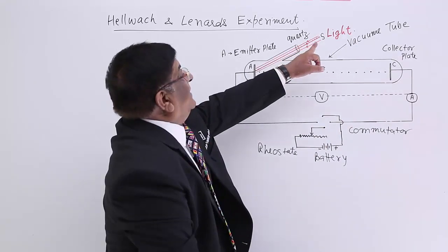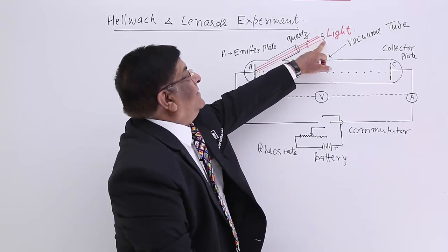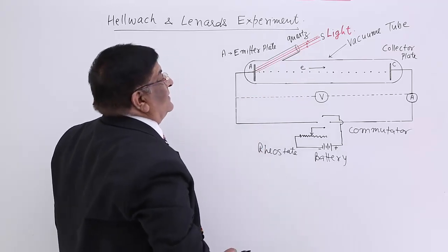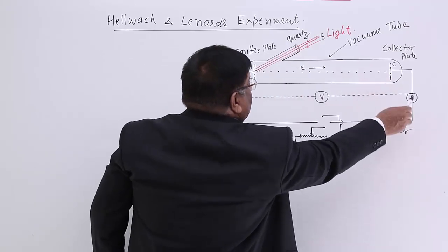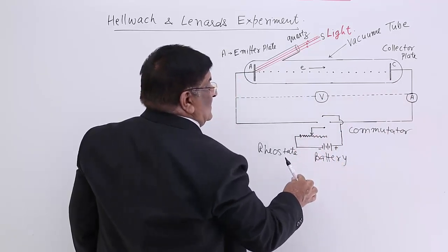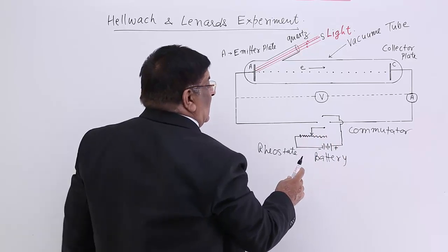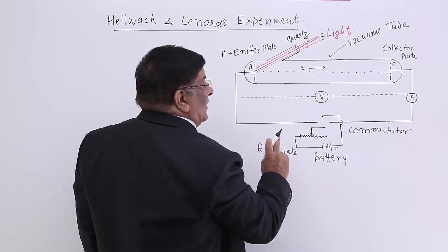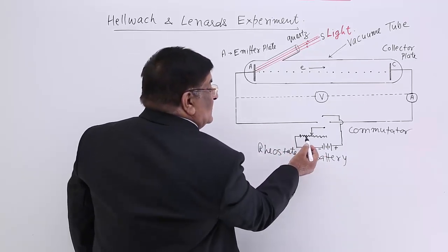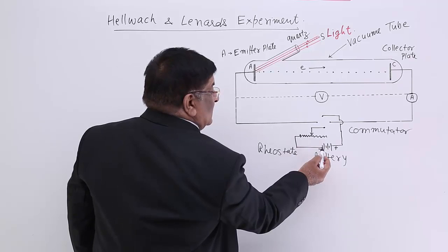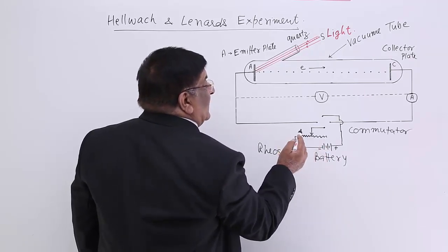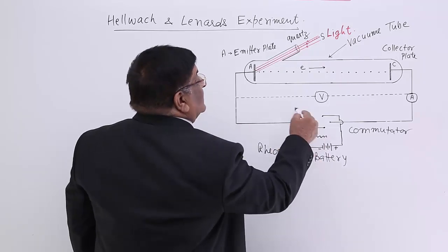Here there was a source of light which can give light as per our requirement. These two electrodes are fitted with a supply of battery. Here is an arrangement — a very elaborate arrangement — to change the potential difference and to change the direction of current.